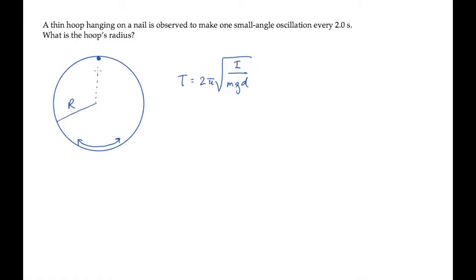For this hoop, that distance d equals the radius r. The moment of inertia is the hoop's moment of inertia about the pivot. That's the moment of inertia about the nail. We can find that using the parallel axis theorem.